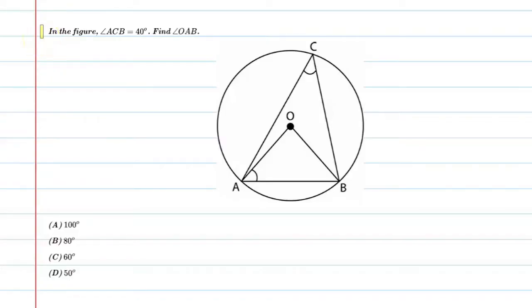Hello students, let's solve this question. In the figure, angle ACB is equal to 40 degrees. Find angle OAB. So, you can see this is a circle with chord AB. This chord AB creates a center angle, that is AOB, and there is another angle at point C on the circle, that is ACB. The value of ACB is 40 degrees.